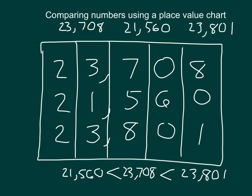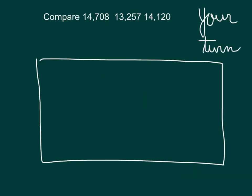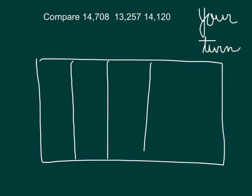There are different tools available to compare numbers. Here, let's use a place value chart to compare these numbers — and it's your turn. How many places are in each of these numbers? Right, there are five places within each of those numbers. As you create your place value chart, make sure you have five places. Use numerals to place the numbers in your chart, then write a number sentence showing which number is less than the other. Pause the video while you're doing your work.